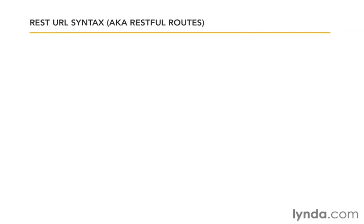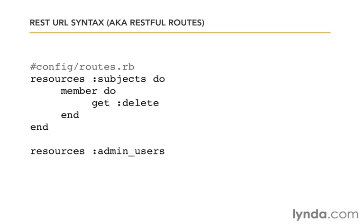REST still lets us use the basic CRUD actions we already have in our controller — we don't have to change those. But the URLs we use to access them are different. Because these basic operations are standardized, Rails gives us a convenient shortcut in our routes file: we simply declare a resource. Resources subjects and Resources admin users are the key parts. Resources handles seven out of our CRUD actions by default. This call to Resources creates all the routes needed to map the RESTful syntax to our CRUD actions.